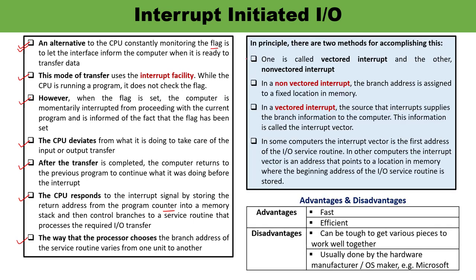There are two approaches: Vectored Interrupt and Non-Vectored Interrupt. In a Non-Vectored Interrupt, the branch address is assigned to a fixed location in memory. In a Vectored Interrupt, the source itself that interrupts supplies the address — that is what the interrupt vector is. In some computers, the interrupt vector is the first address of the I/O Interrupt Service Routine, while in others it is an address pointing to a memory location that denotes the beginning address of the I/O ISR.